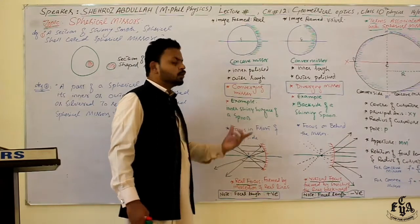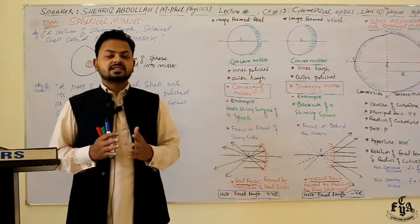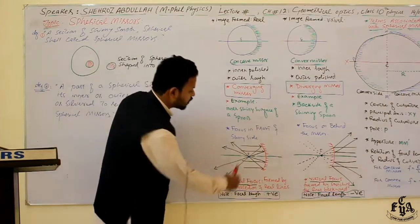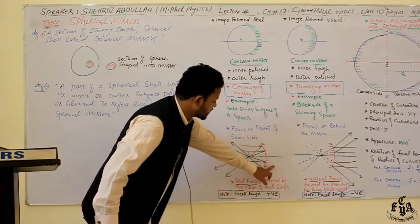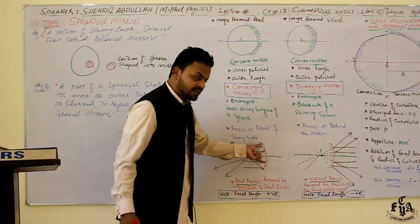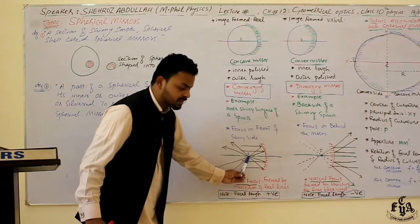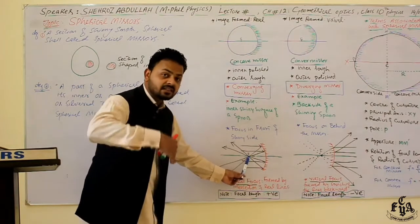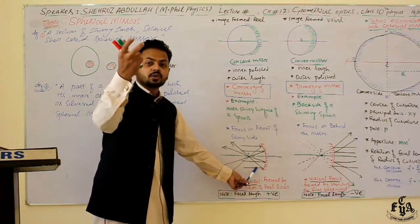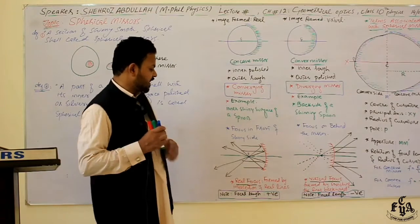The best example of a concave mirror is the inner shiny surface of a spoon. The focus of a concave mirror is on the front side. The incident beam of light comes towards the mirror, strikes it, and after reflection gathers at a single point F. Since the concave mirror has the ability to converge light rays after reflection on a single point, they are called converging mirrors.